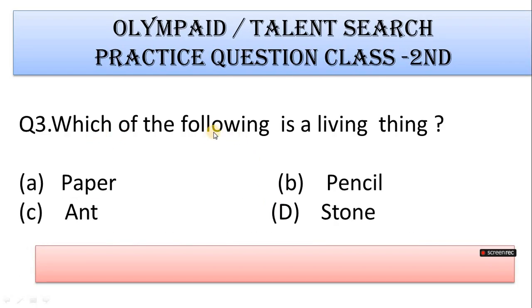Number 3: Which of the following is a living thing? A. Paper, B. Pencil, C. Ant, D. Stone. Correct answer is Option C. Ant.